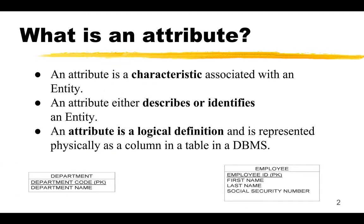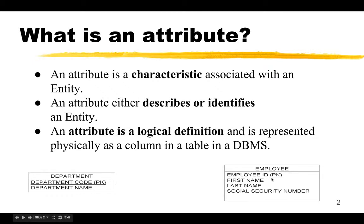As an example, you can have an employee entity, and an employee will have the following attributes: first name, last name, social security number, and probably an assigned employee ID. Similarly, a department entity will have a department code, department name, and possibly information about